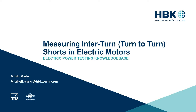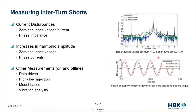It's happening — inter-turn shorts. These are, again, the two windings in the stator getting shorted together. So when you short two windings together, you get big currents. Big currents mean there's stuff we can measure.